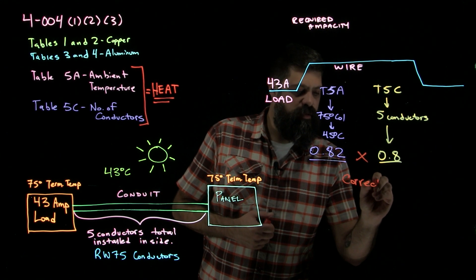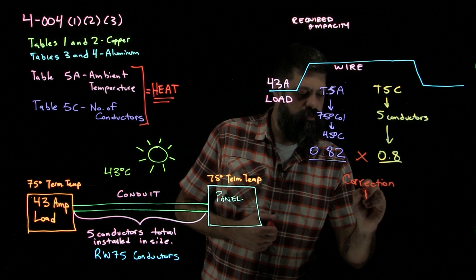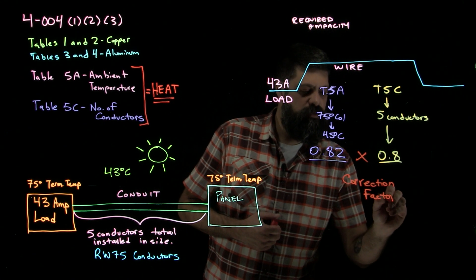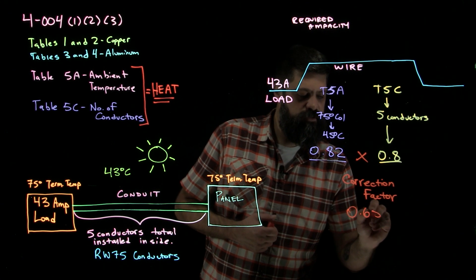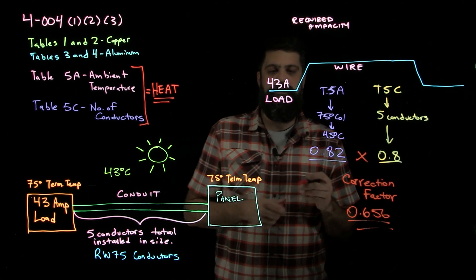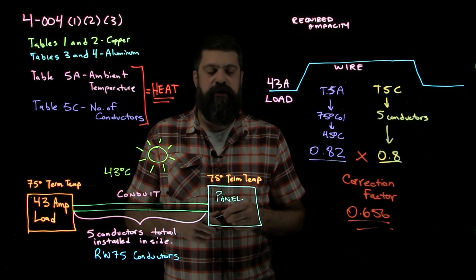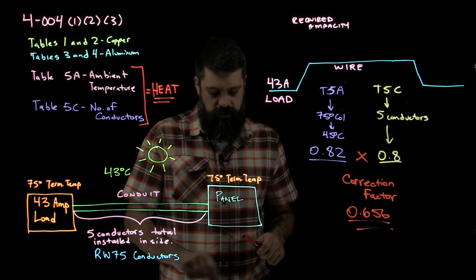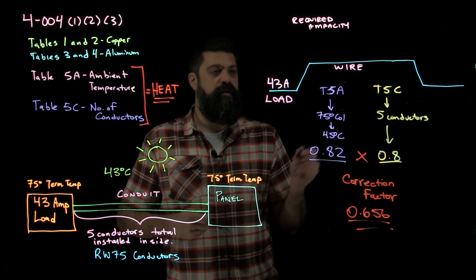My overall correction factor then, when I multiply those two numbers together, becomes 0.656. This is the number that we're going to use to figure out everything else as we go through this picture right here to figure out what kind of current we have and then what kind of wire that we need.